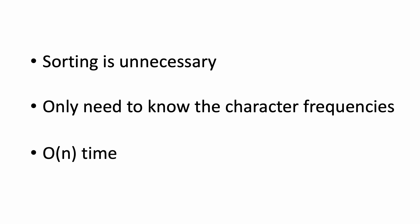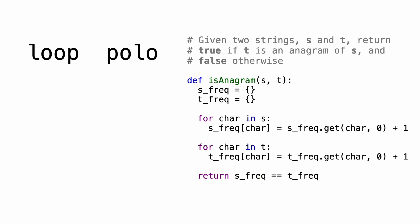Now let's look at the code and solve this in Python. Let's assume the two strings s and t are loop and polo. The first thing we'll do is create two dictionaries, one for s and one for t, that will store the character frequencies of each string. The dictionaries will have a character as its key and its frequency as its value.